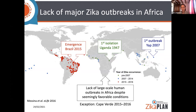So it is kind of puzzling why there was a lack of large-scale human outbreaks in Africa despite seemingly favorable conditions. There is one single exception, which is Cape Verde, where massive outbreaks occurred in 2015 and 2016.